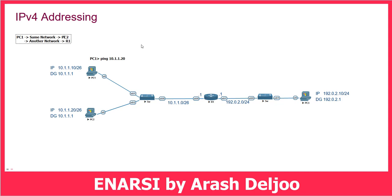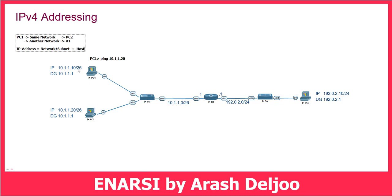In this scenario, PC1 sends the traffic to the default gateway — Router 1. How can PC1 find whether the destination is in its own network or in another network? PC1 should compare its own network ID — meaning the network ID of its IP address — with the destination IP address. You know that an IP address has two parts: the first part is the network or subnet part, and the second part is the host part. We use the subnet mask or CIDR notation to find the network part and the host part.